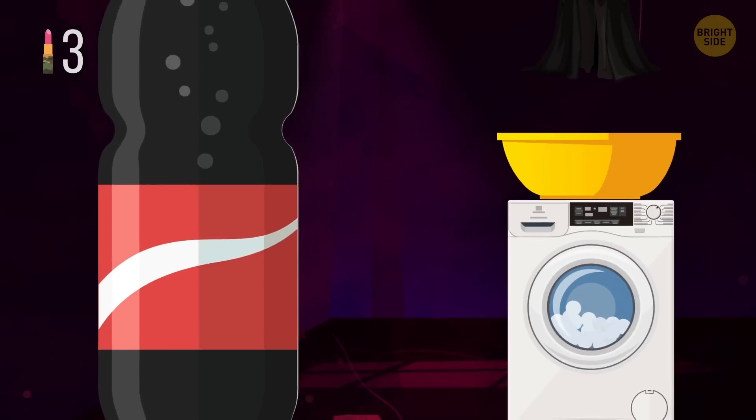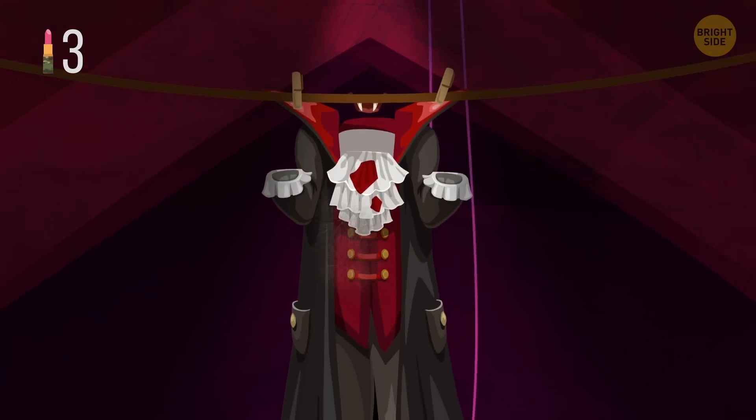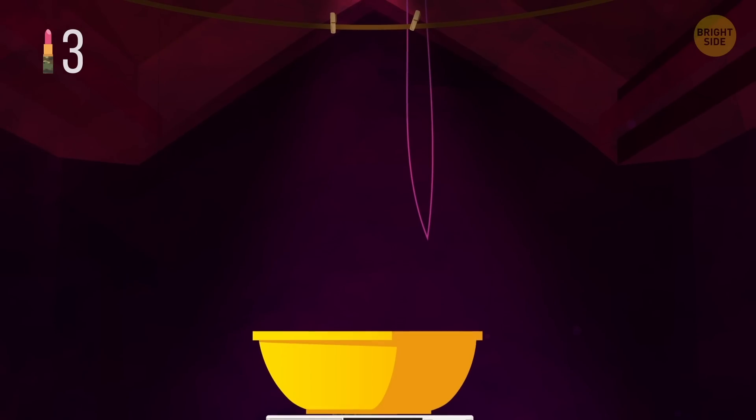Coca-Cola can help you get rid of blood stains. You can soak the soiled piece of clothing in the soda overnight for the best result. However, it might not be the best idea to use this method for white clothes.